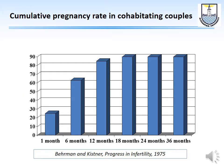If we look at the cumulative pregnancy rate in cohabitating couples, within one month, 25% of those having unprotected intercourse will become pregnant. Within six months, 60%; within 12 months, 80%. The plateau is reached at 18 months at 90%, and those who do not become pregnant after 18 months will find it difficult to conceive afterwards. Therefore, the definition of infertility should really be inability to conceive after 18 months of unprotected intercourse.